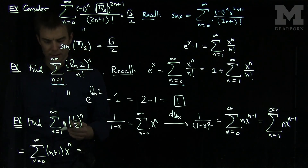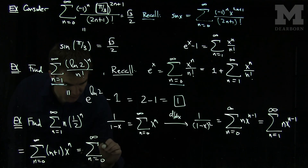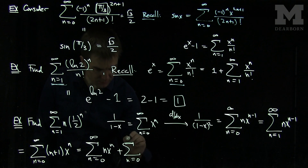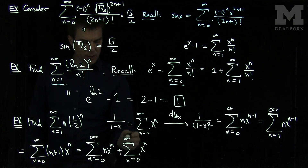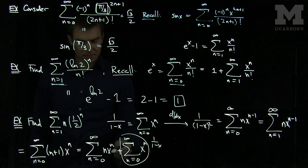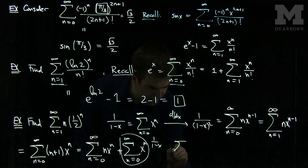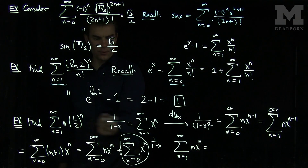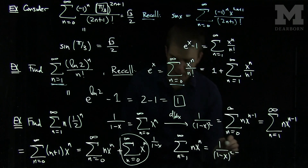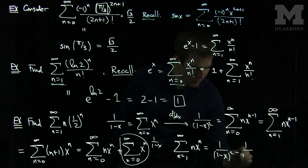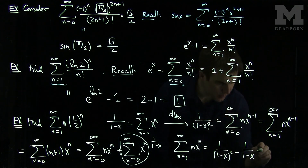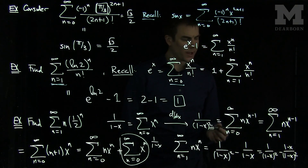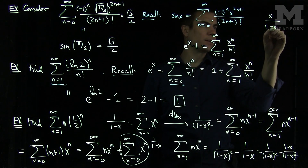We can split this into two parts: the sum n goes from 0 to infinity of n times x to the n, plus the sum n goes from 0 to infinity of x to the n. This second sum goes to 1 over 1 minus x. So the sum n goes from 1 to infinity of n times x to the n equals 1 over 1 minus x squared minus 1 over 1 minus x. Giving a common denominator, this is 1 over 1 minus x squared minus 1 minus x over 1 minus x squared, and the 1 cancels, leaving x over 1 minus x quantity squared.